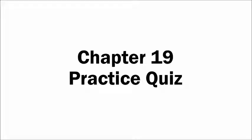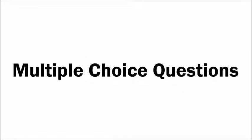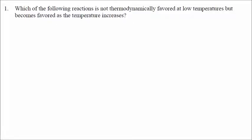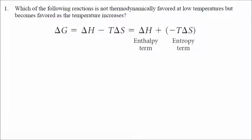These are the answers to the chapter 19 practice quiz. Starting with the multiple choice questions, number one: which of the following reactions is not thermodynamically favored at low temperatures but becomes favored as the temperature increases? Considering the Gibbs free energy equation, delta G equals delta H minus T delta S.